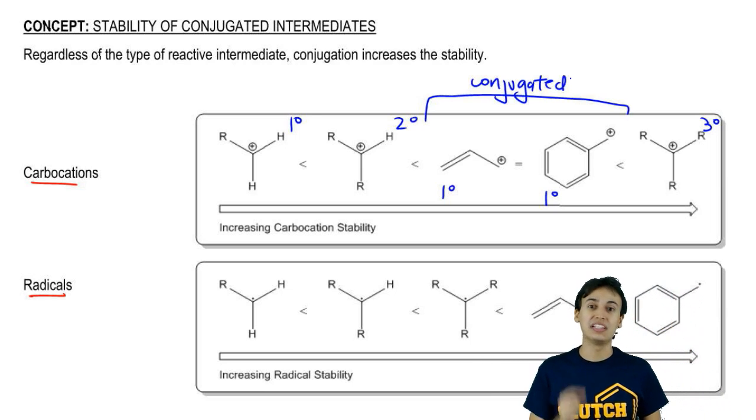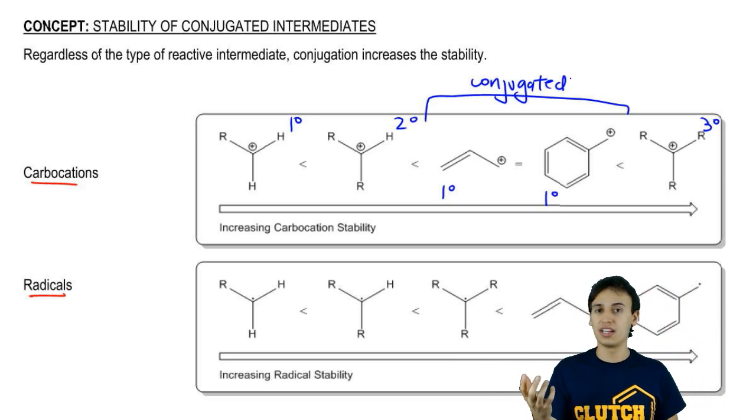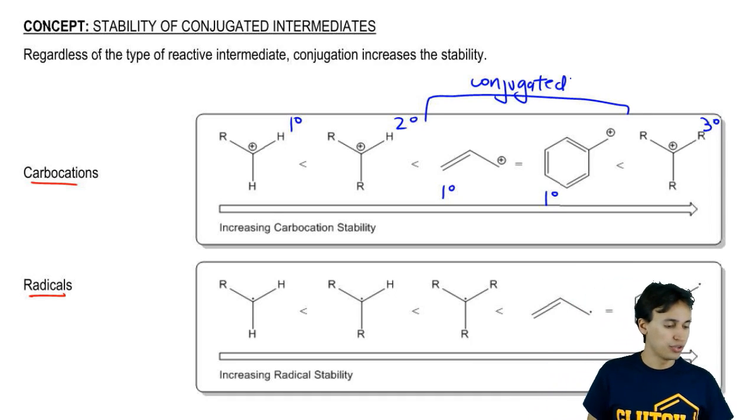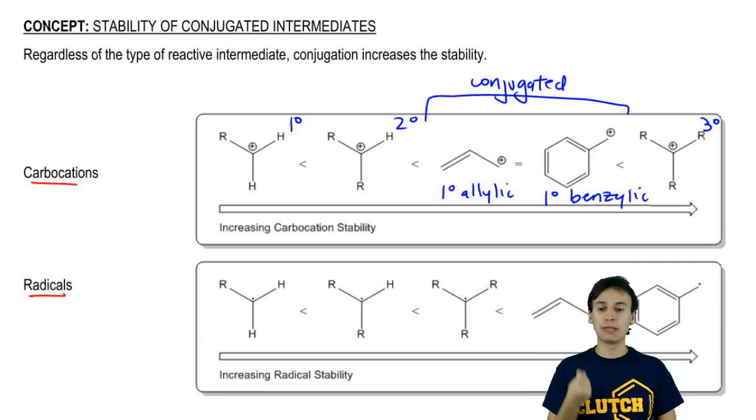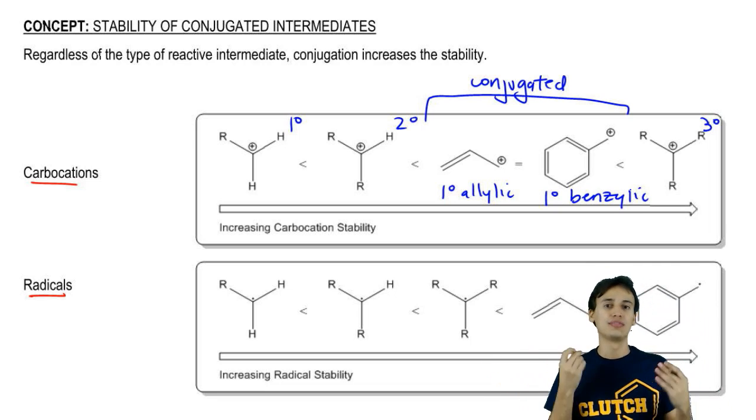As you can see, they have at least three atoms that can resonate in a row. So this would be called primary allylic and this would be called primary benzylic. Either way, both of these are going to be more stable than a typical primary because of their ability to resonate.